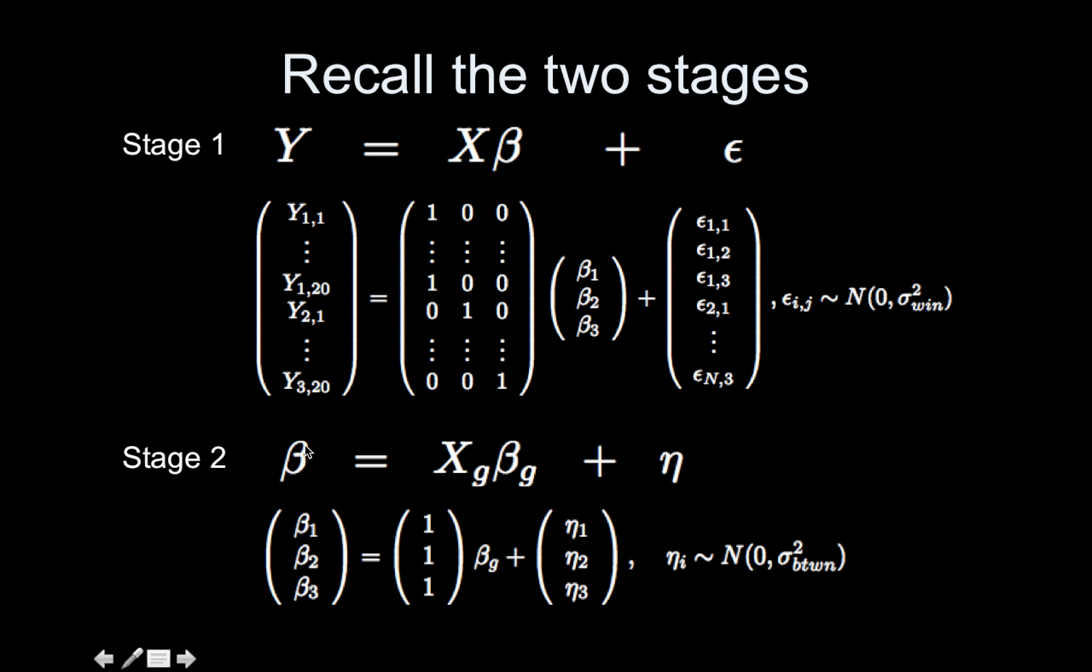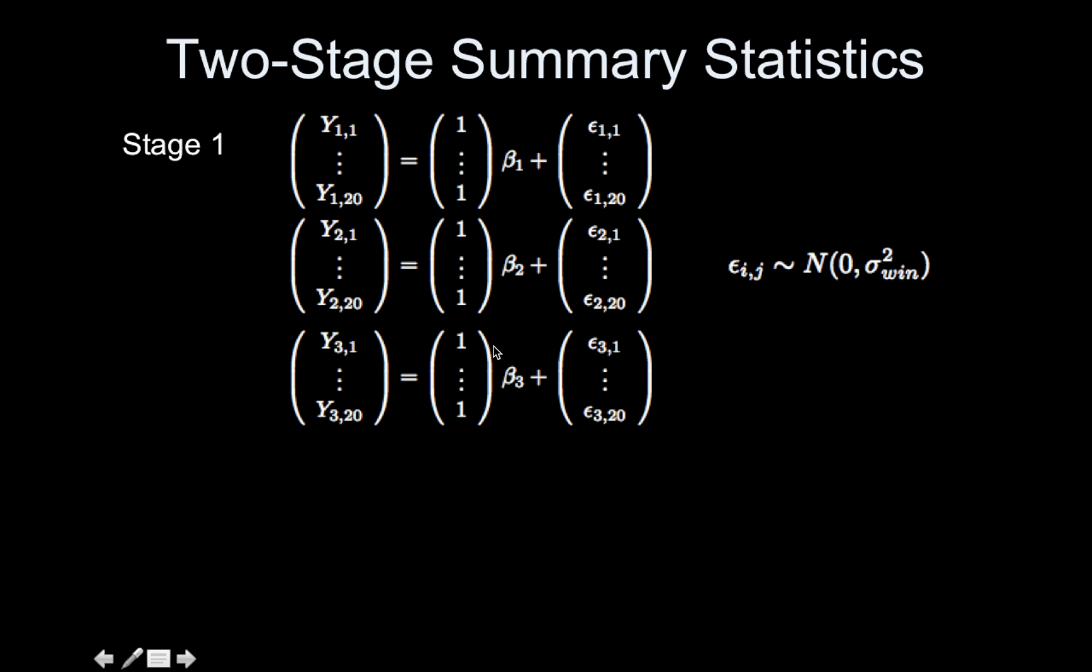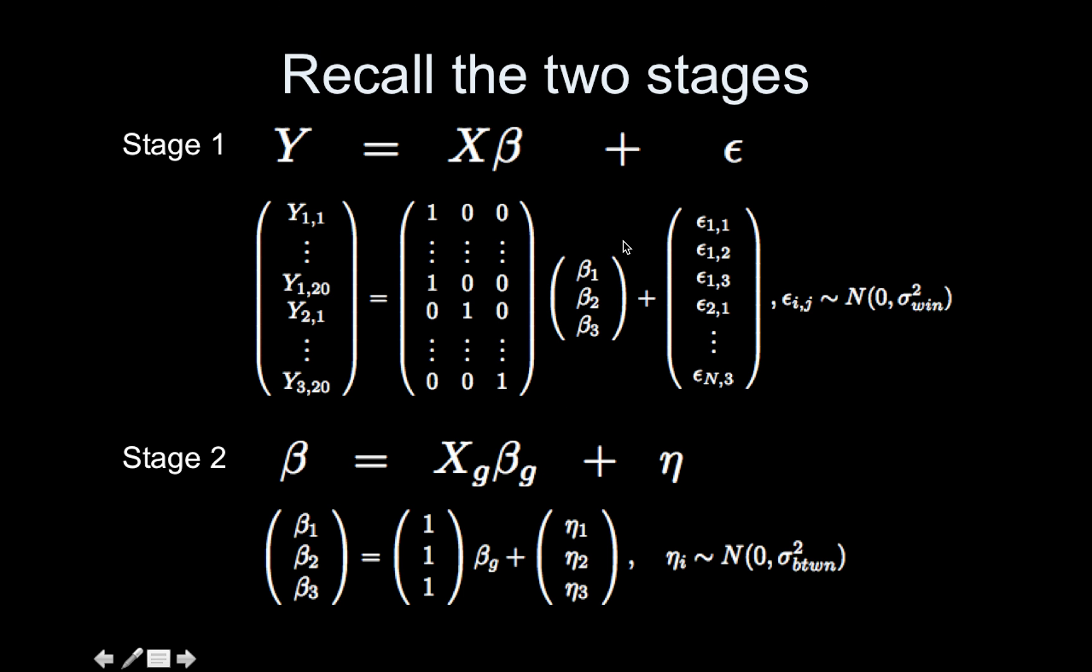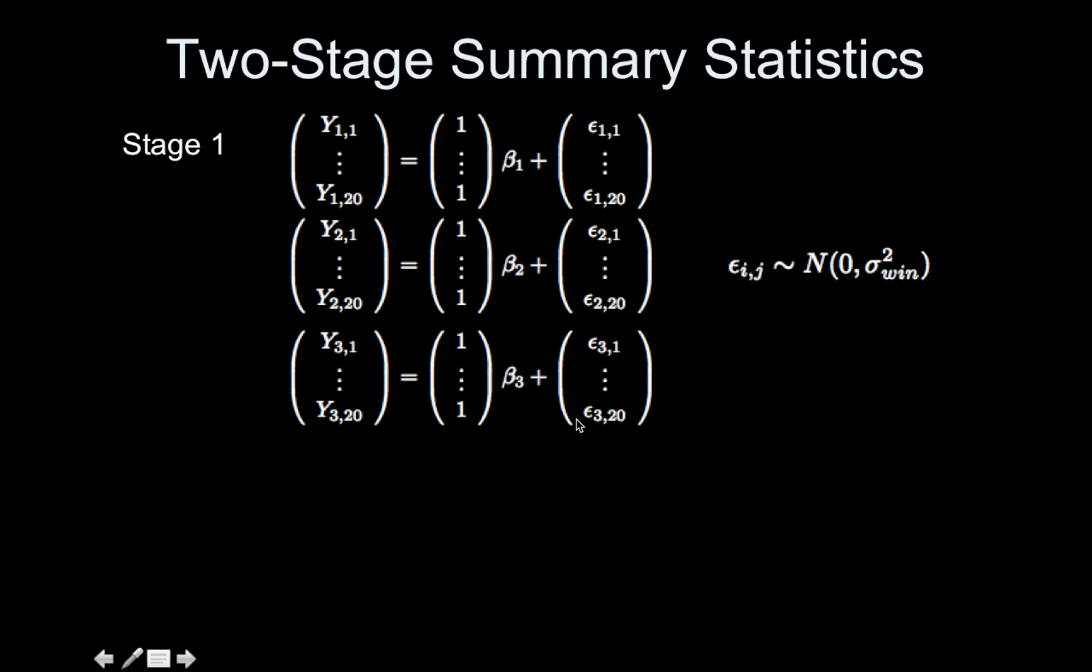So before, we plugged stage two into stage one, but now, instead of doing that, we're going to keep them separate. Not only that, we're going to change up stage one a little bit. Before, we estimated these betas all at once, but let's just do it separately. There's no need to put all the ladies into the same model. Let's just estimate their average hair length within each person.